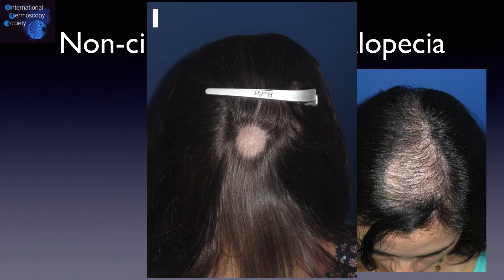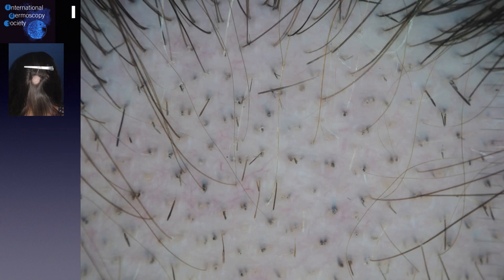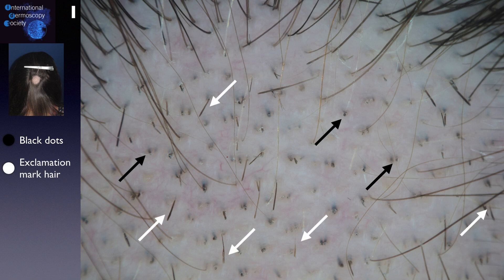The first patient has a round plaque on the occipital area. From trichoscopy, we can see many dystrophic hairs, mostly black dots or cadaveric hairs, and many exclamation mark hairs. It is also possible to notice vellous hairs along the lesion.